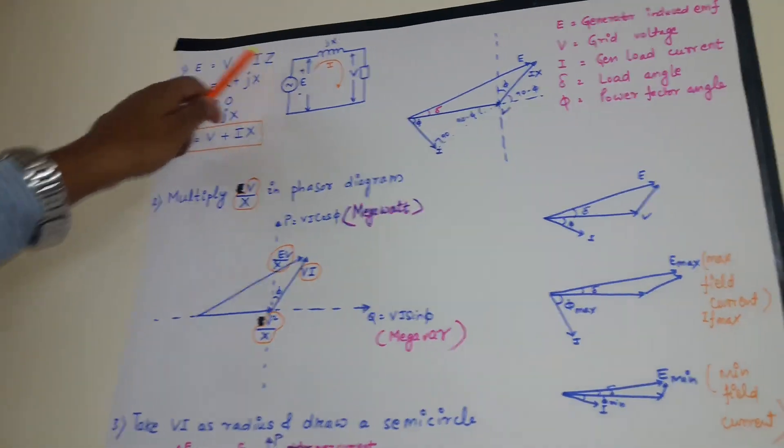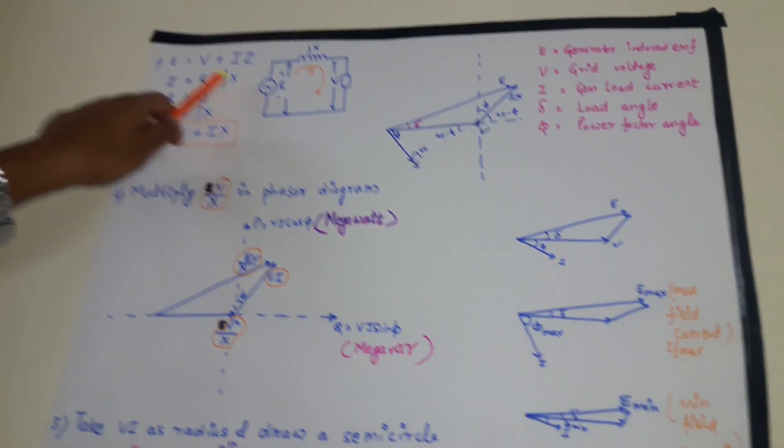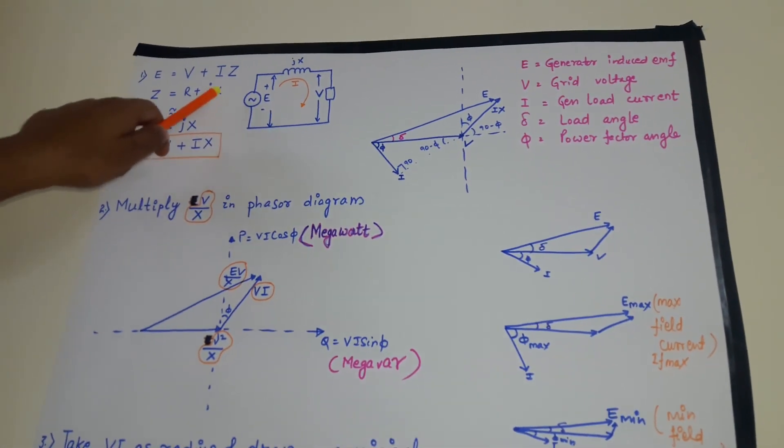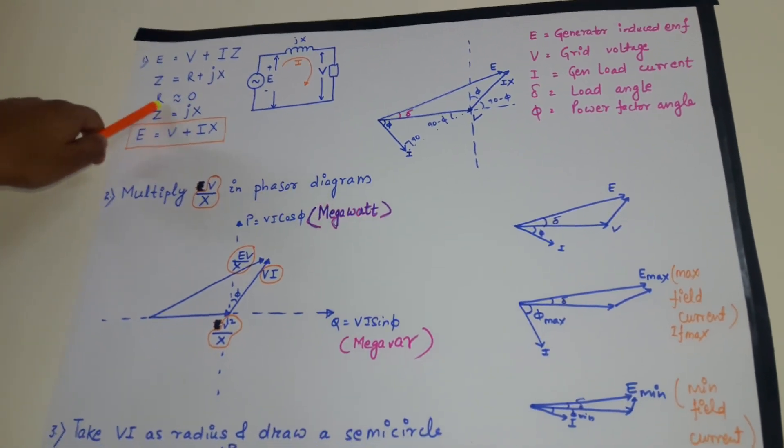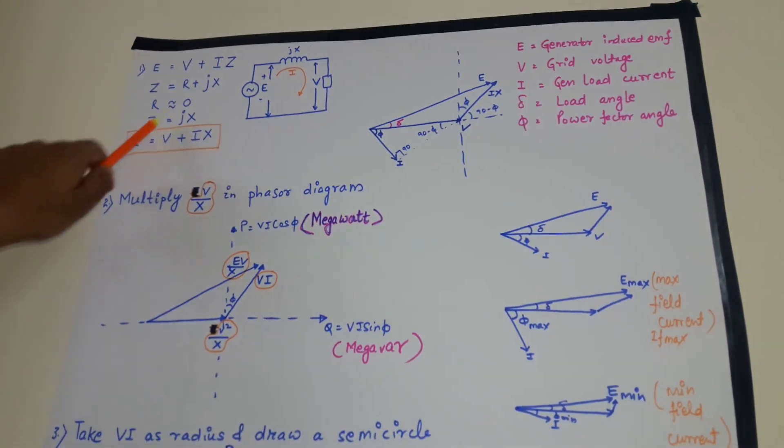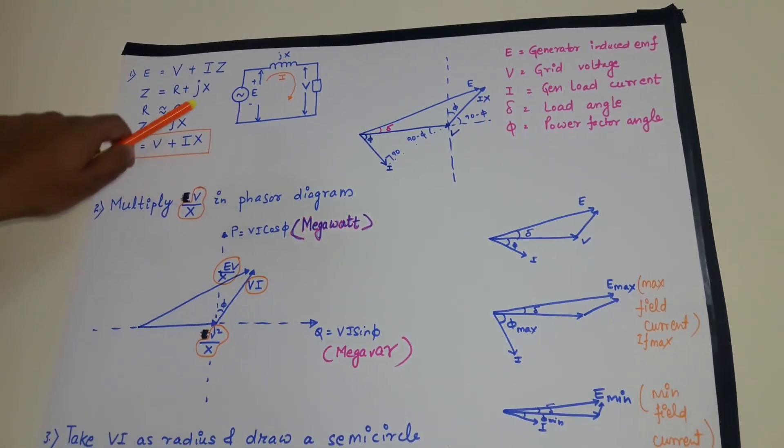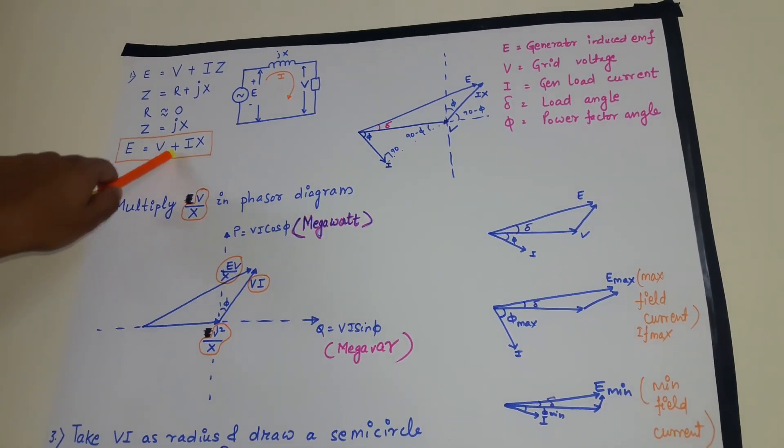Z is equal to R plus jX where R is the resistance and X is the synchronous reactance. Let R is nearly equal to zero. So Z will be equal to X. So we can rewrite this equation as E equals to V plus IX.